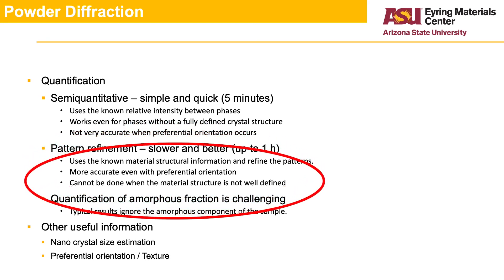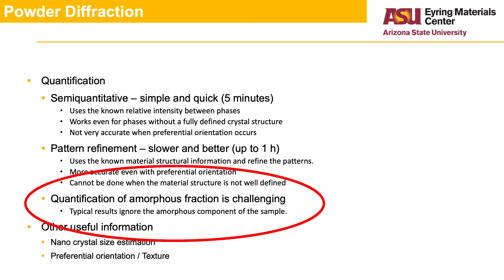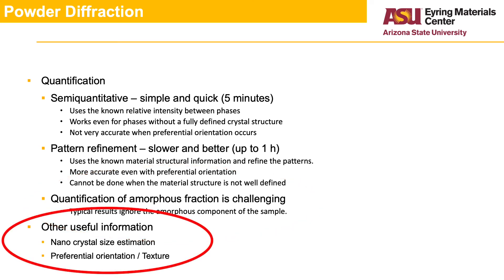Another issue that can affect the results is the presence of an amorphous component in the sample, which can be challenging to quantify. Most analyses assume the sample is fully crystalline. Powder diffraction can also provide additional information about the crystallite size for nanocrystalline materials, as well as information on preferential orientation, also referred to as texture, which is often an important factor to consider in metallurgy, for example.